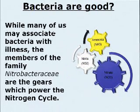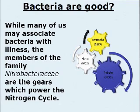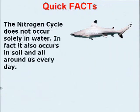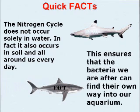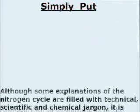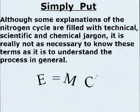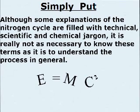Bacteria Are Good. While many of us may associate bacteria with illness, the members of the family Nitrobacteriaceae are the gears which power the nitrogen cycle. The nitrogen cycle does not occur solely in water — in fact, it also occurs in soil and all around us every day. This ensures that the bacteria we are after can find their own way into our aquarium. Simply put, although some explanations of the nitrogen cycle are filled with technical, scientific, and chemical jargon, it is really not as necessary to know these terms as it is to understand the process in general.